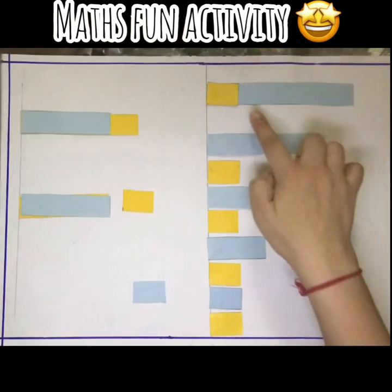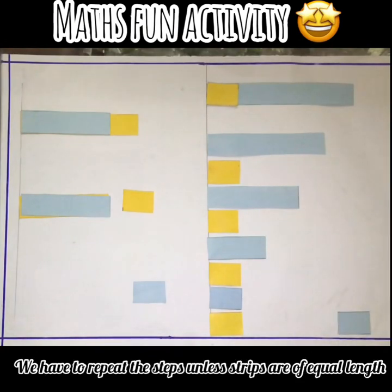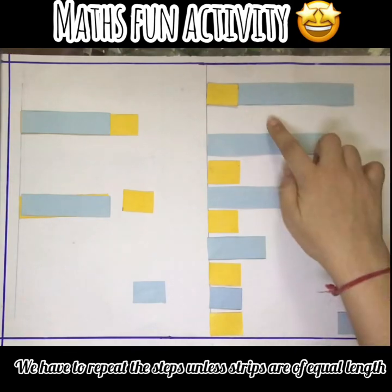We are going to repeat this again and again unless the strips are of equal length at the end. So again, I'm going to get 12 and I'll place it here. Again, I'll take a 3 and I'll place it over the 12, and I see my 9 is extra.